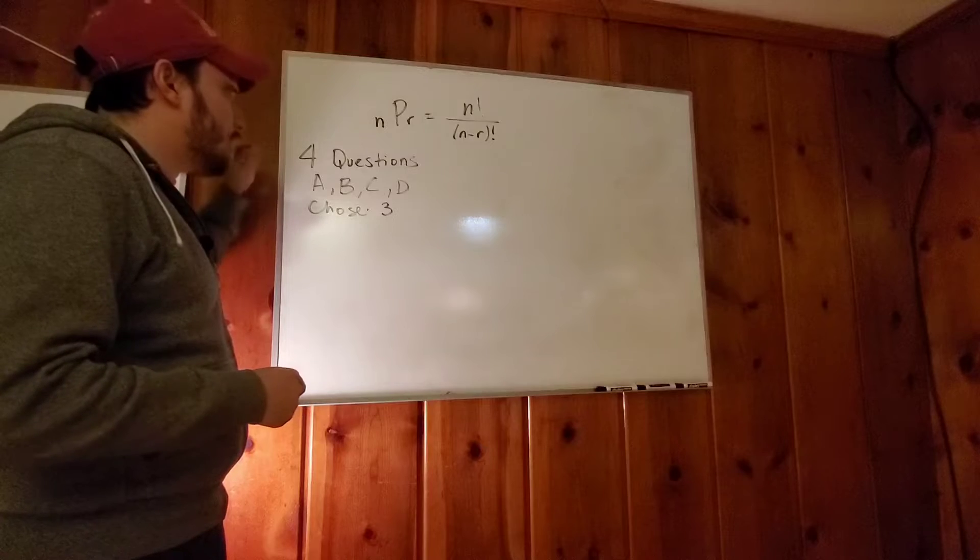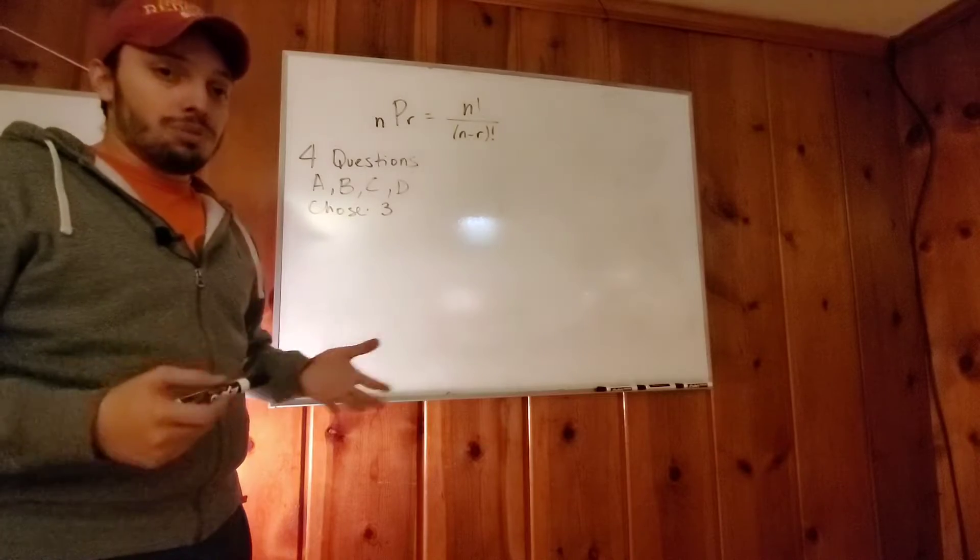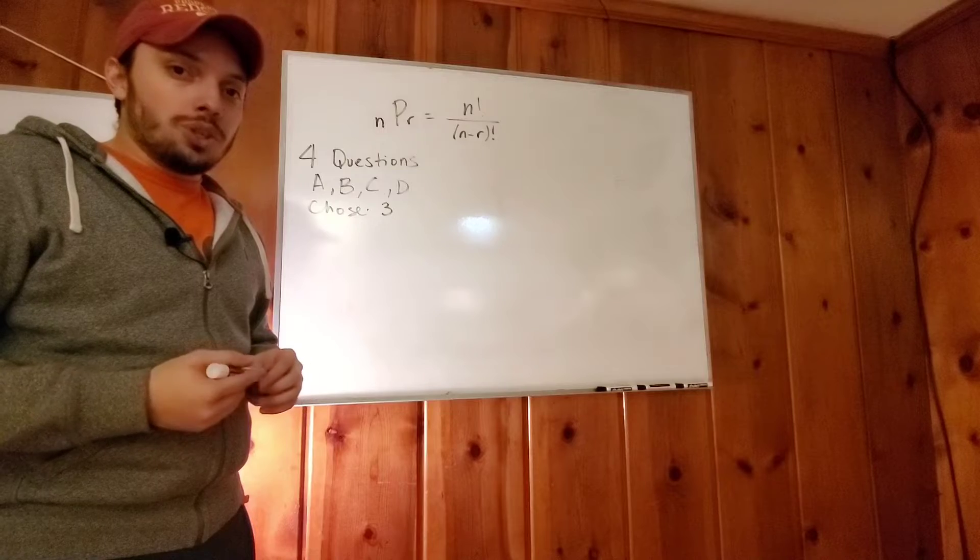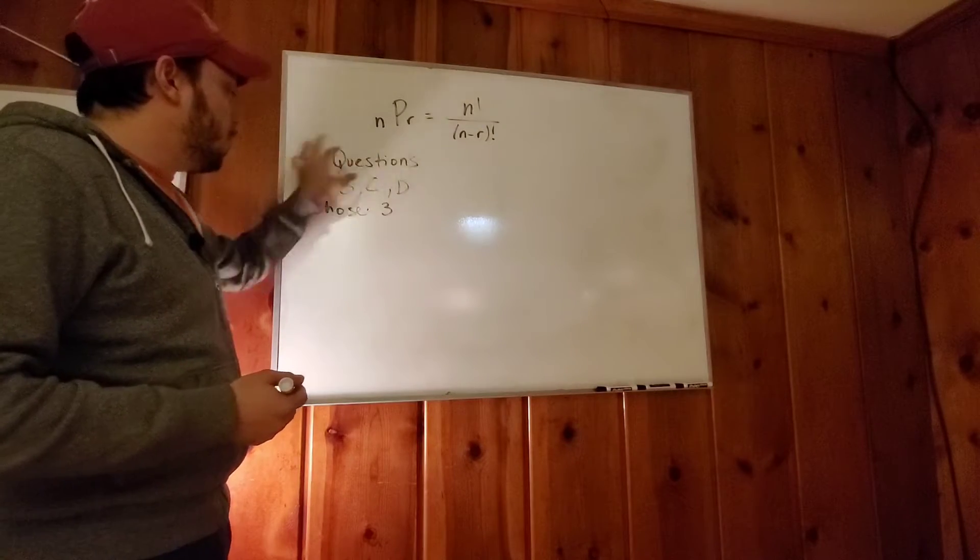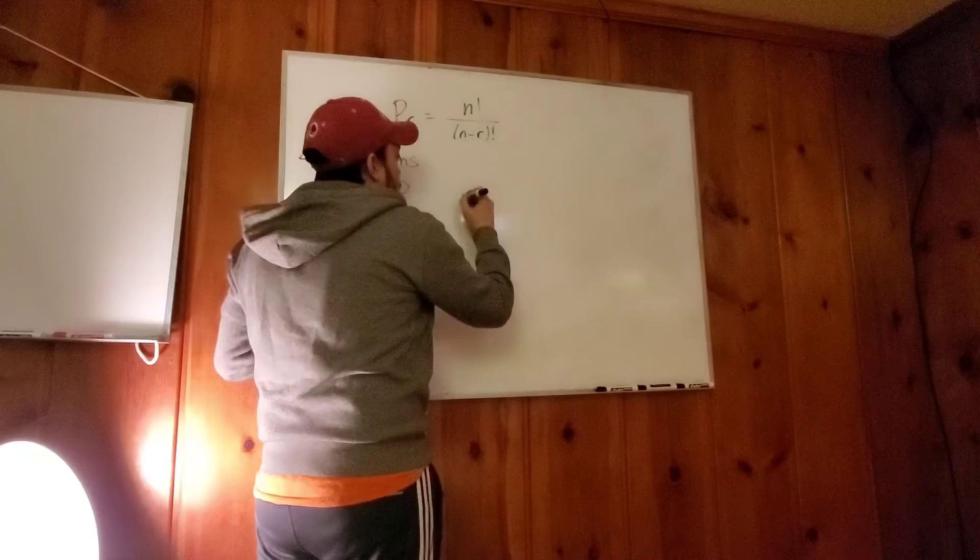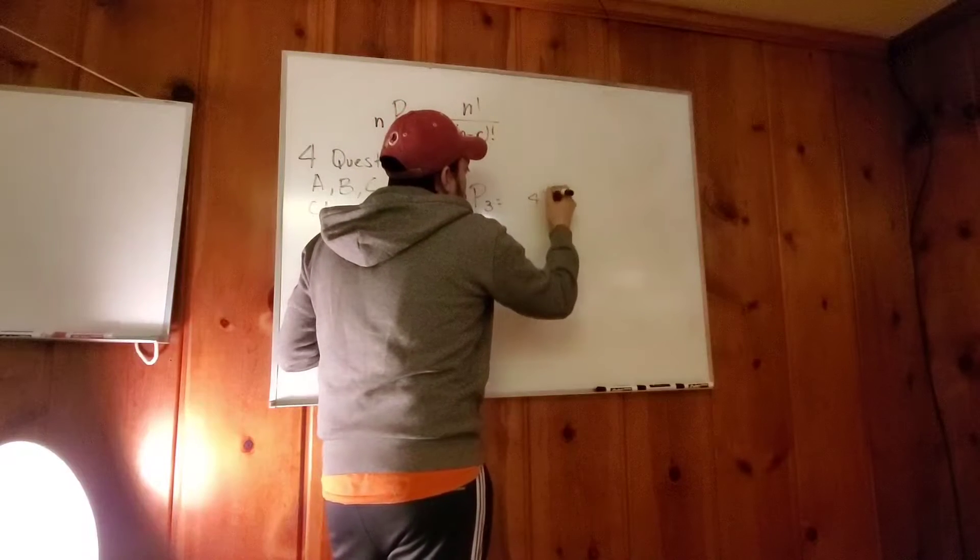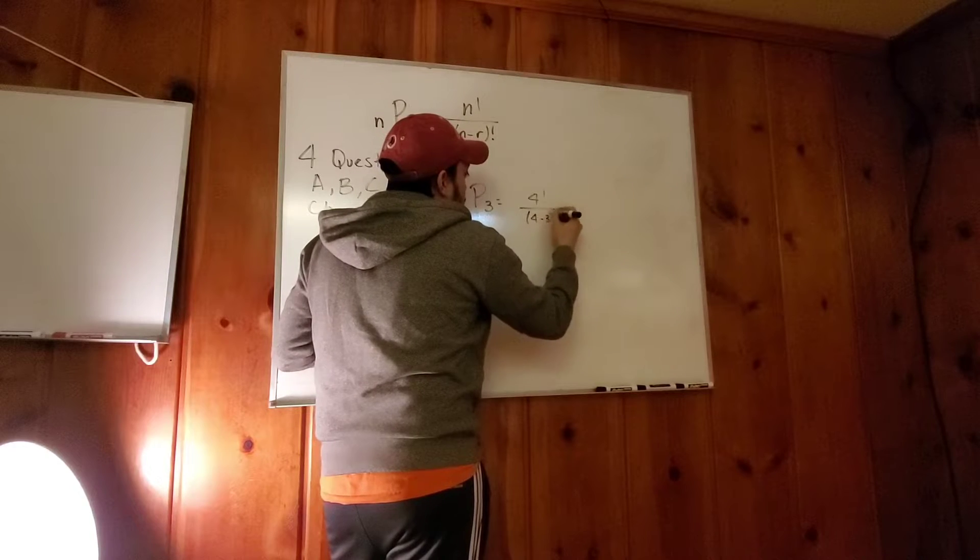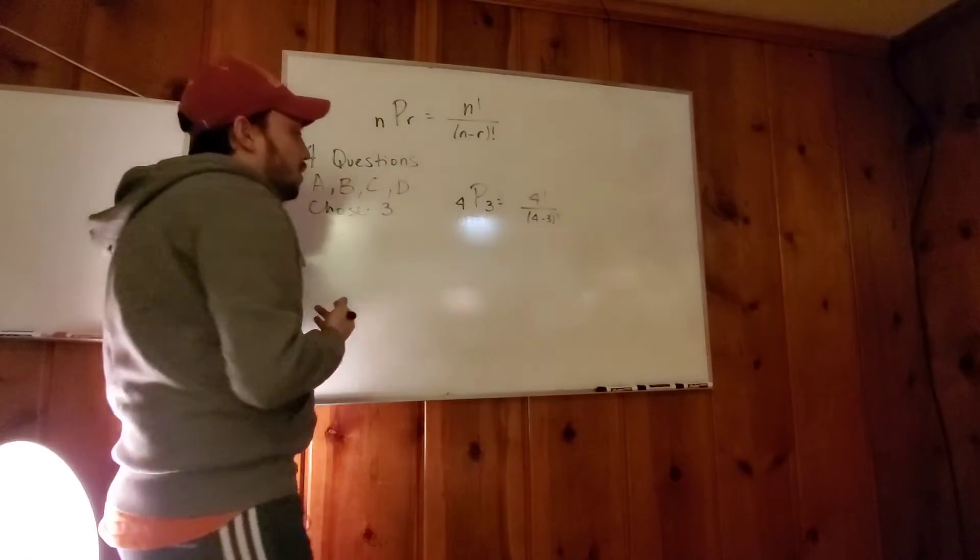First, they say there's a test with four essay questions, A, B, C, D, and each student has to choose three. So how many overall permutations could there be? So how many choices do we have? We have four, right? Four questions, but we must only choose three. So my formula would be like this. Four P three equals four factorial over four minus three factorial, right? Four factorial over four minus three factorial.